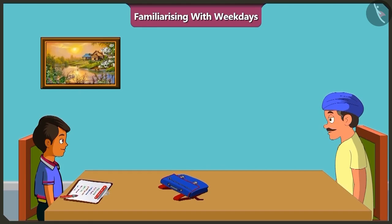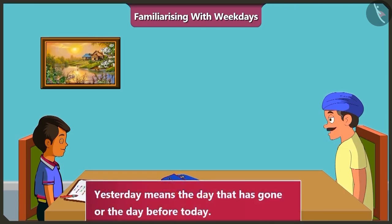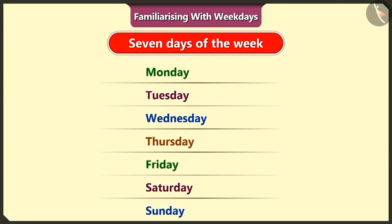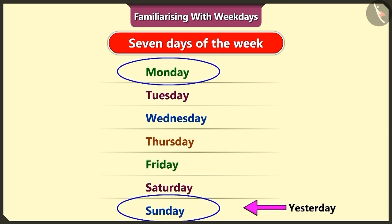Yesterday was which day of the week? Yesterday means the day that has gone, or the day before today. Today is Monday, so the day before that was Sunday. Mark a circle on Sunday and write yesterday next to it.